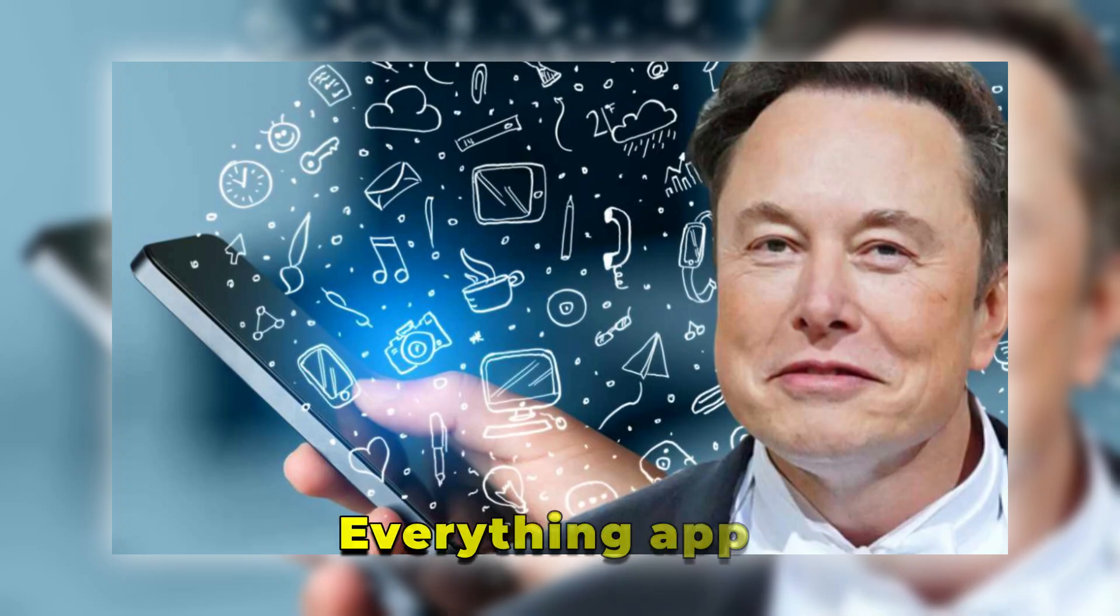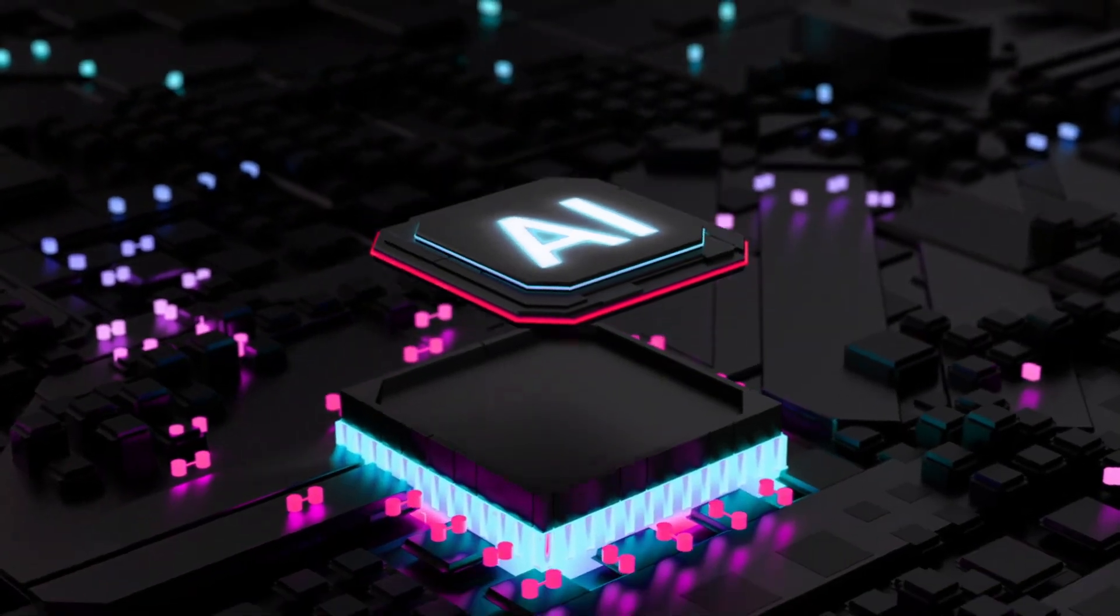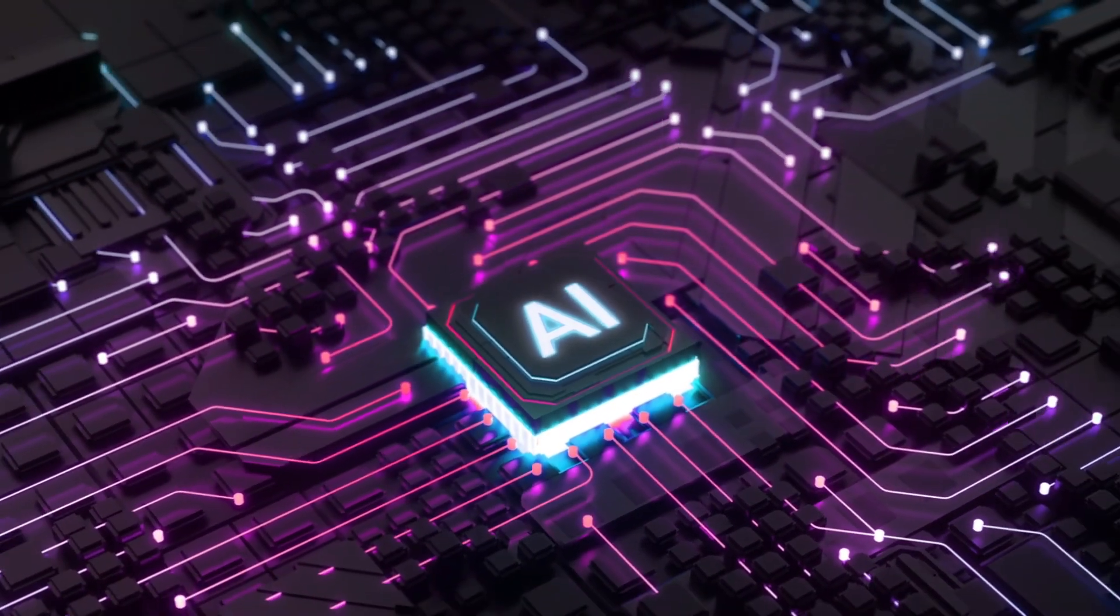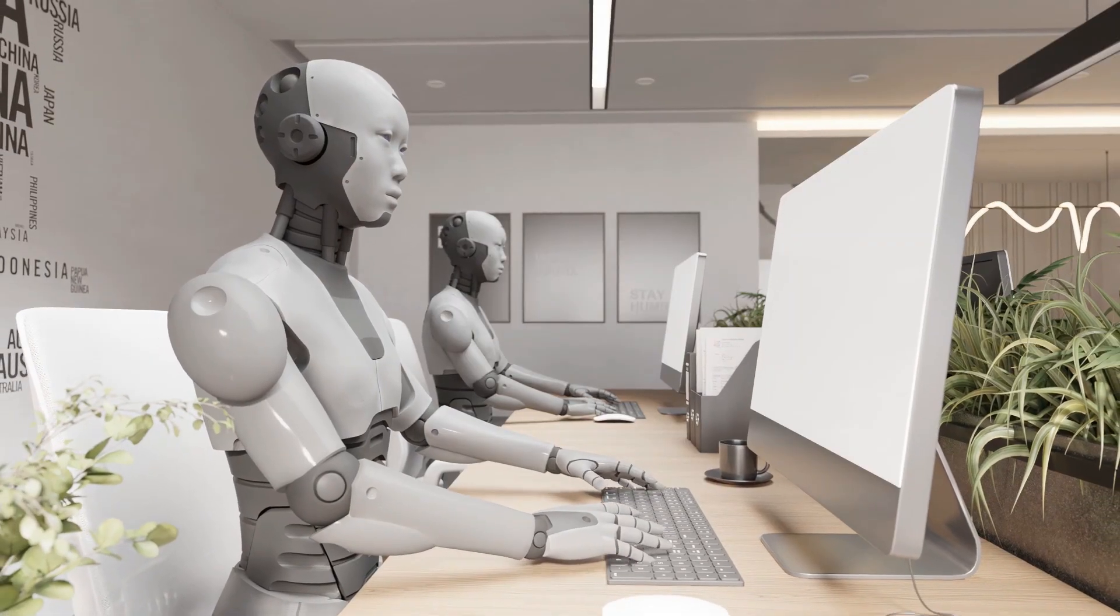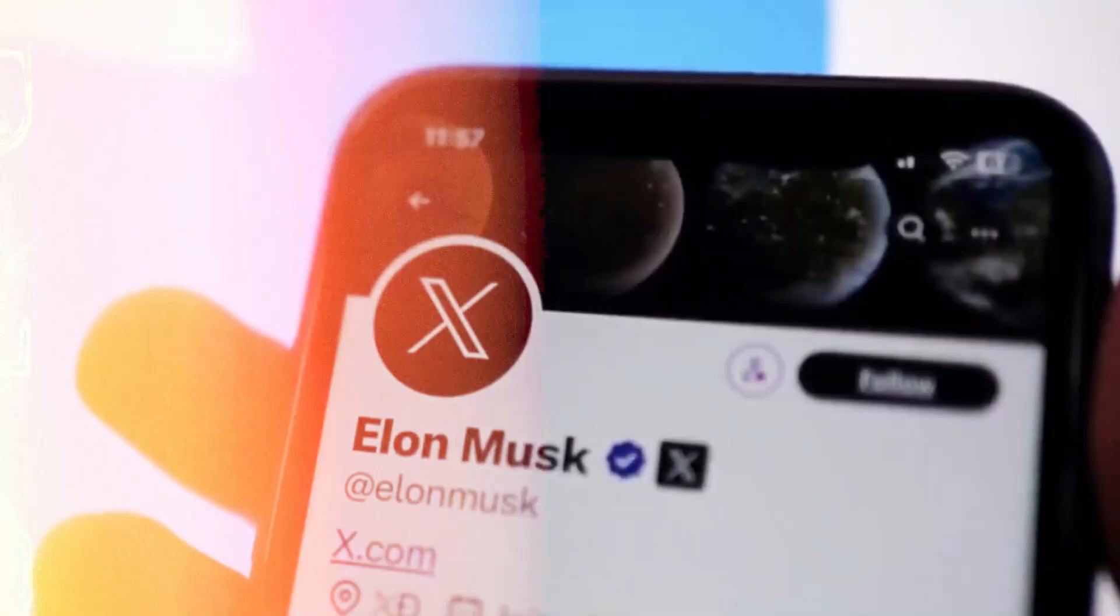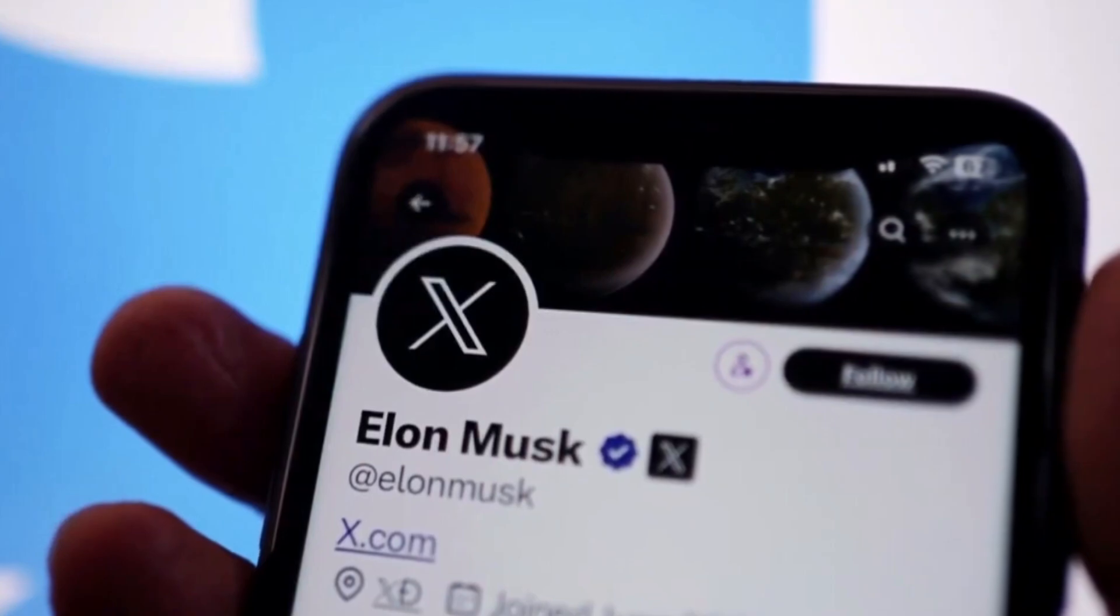To transform it into an everything app, a multifunctional platform that integrates AI technologies to reshape how people interact, share, and consume content globally. For Musk, Twitter's existing strengths, its cultural relevance, vast user base, and real-time connectivity represent untapped potential.